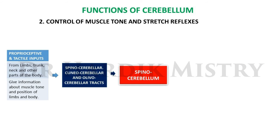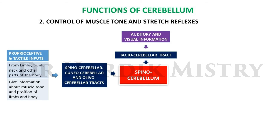The spinocerebellum controls muscle tone and stretch reflexes. Afferents from spinocerebellar, cuneocerebellar, and olivocerebellar tracts carry feedback from proprioceptive and tactile receptors, providing information about muscle tone and limb position. The spinocerebellum also receives auditory and visual information via the tectocerebellar tract and cortical inputs via pontine nuclei.